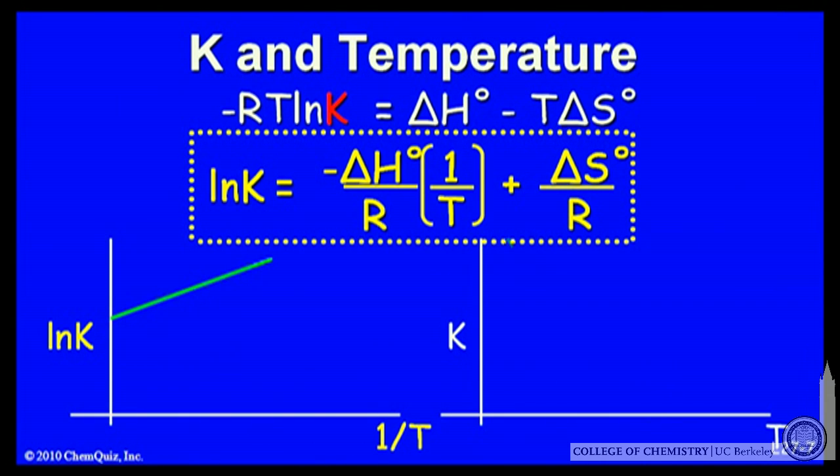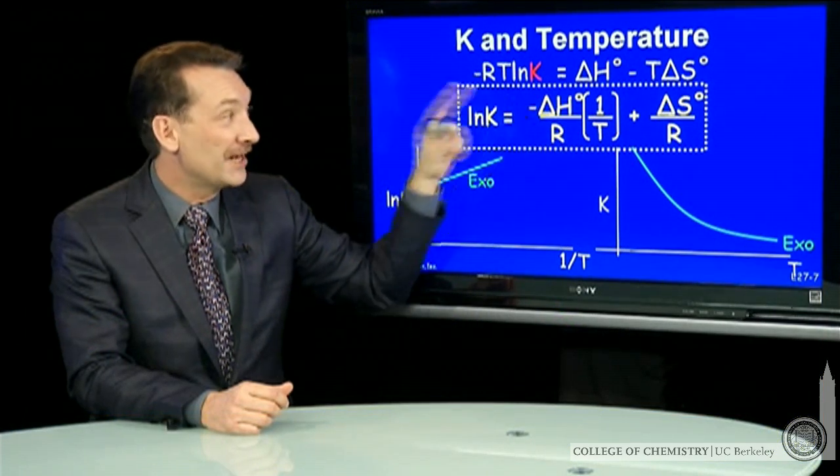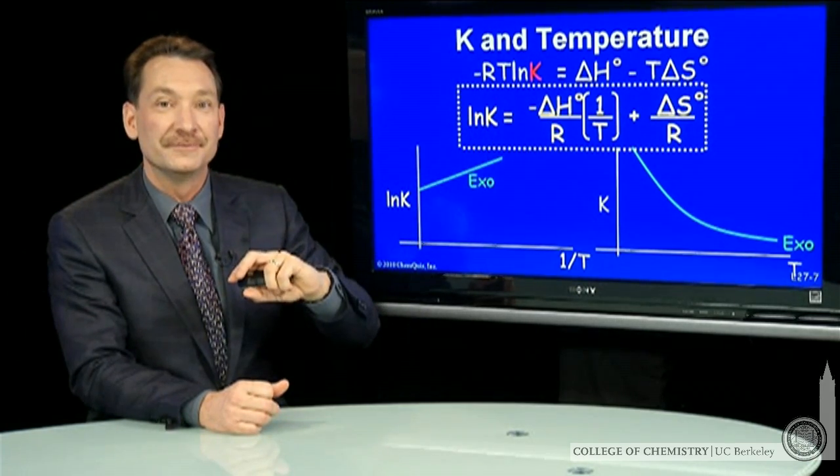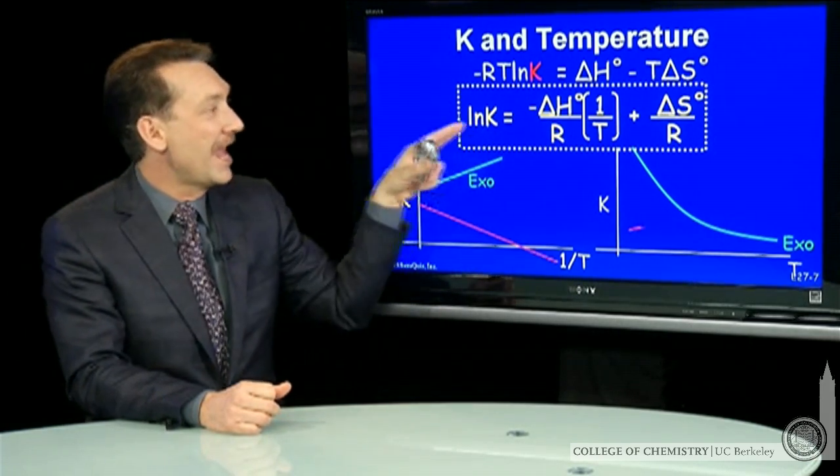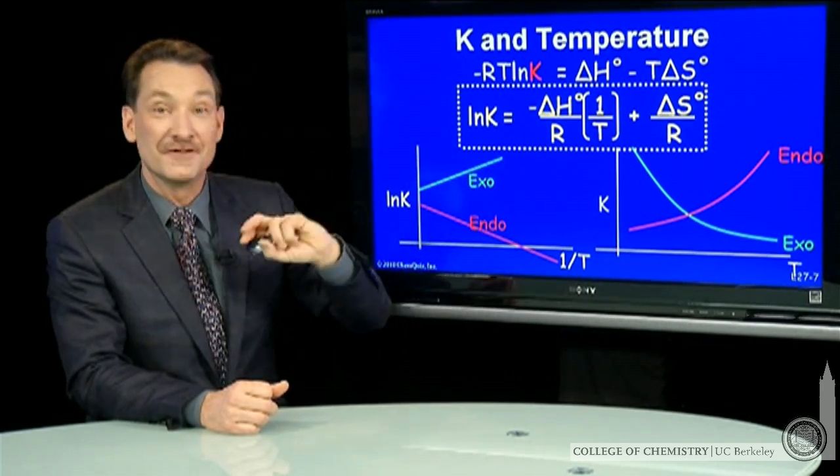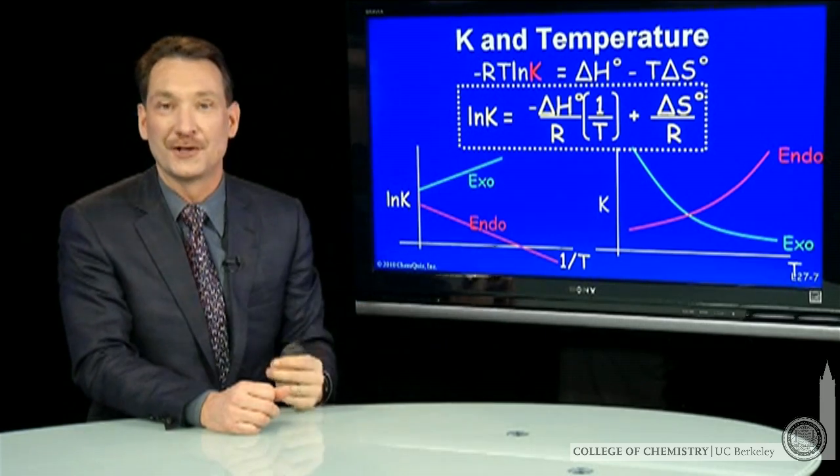If I have an exothermic chemical reaction, I have ΔH negative, but a negative sign is built in here, so this slope I expect to be positive. If I have an endothermic chemical reaction, that's a positive ΔH. That negative is built in, so I'd have a negative slope.